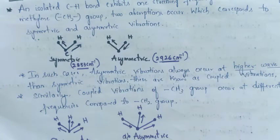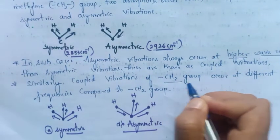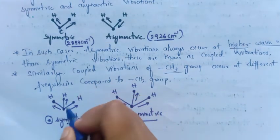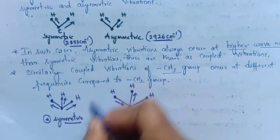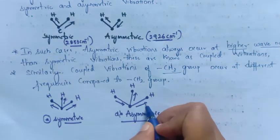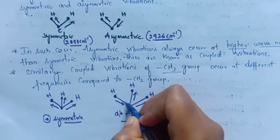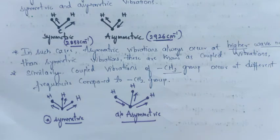Coupled vibrations are not only observed in the CH2 group but also in the CH3 group. In symmetric stretching, every bond stretches in the same direction, whereas in asymmetric stretching, two bonds stretch in one direction and one comes toward the central atom. Please remember that in coupled vibrations, asymmetric vibrations always occur at higher wave number — this is the most important point.